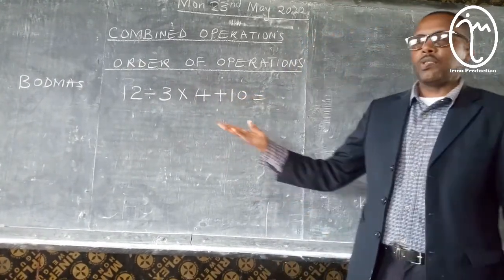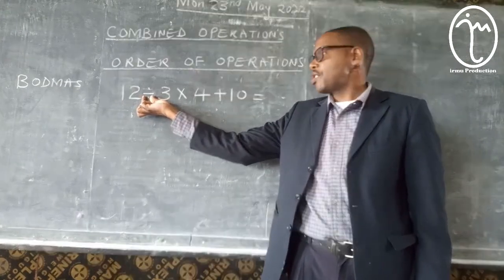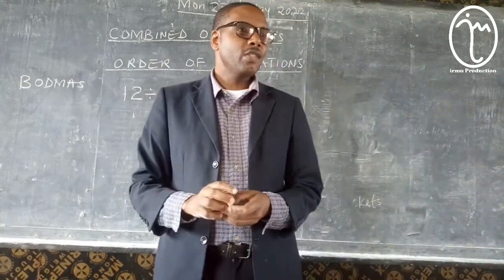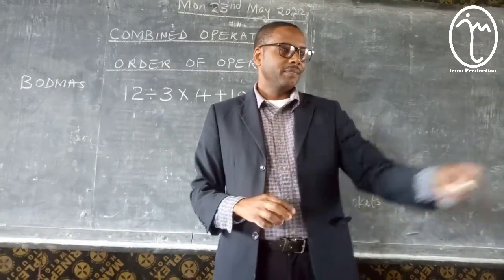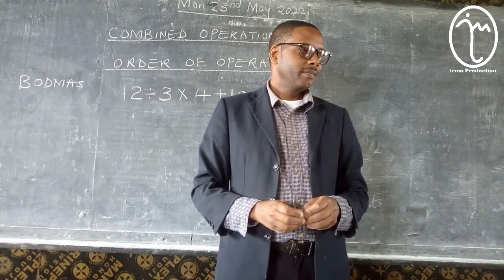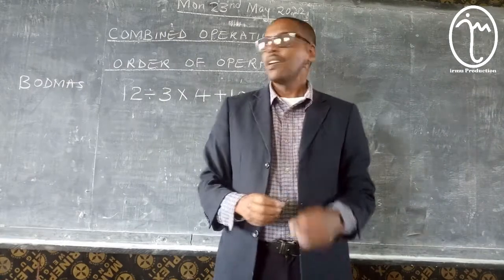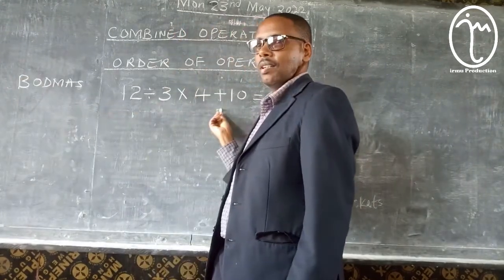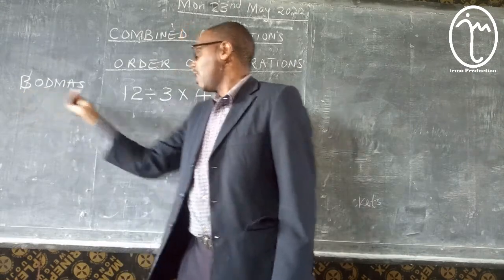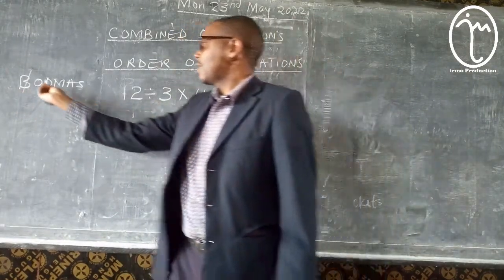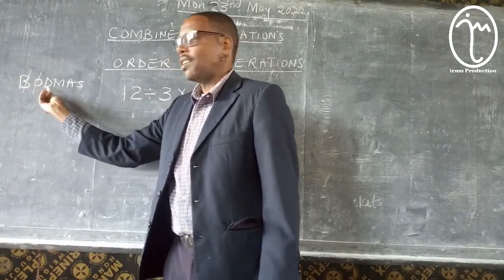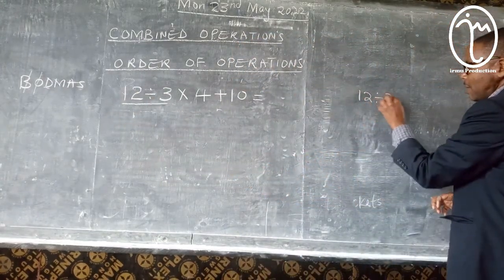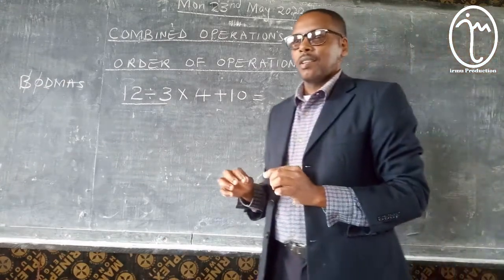Now I want us to do this question. It is made up of division, multiplication, and addition. So who can tell us which is the first operation we are going to do? We are going to start with division. Look at me — is there a bracket in the question? No. So we just cancel bracket. Is there an 'of' in the question? No. Is there division? Yes. Okay, we should first divide. I underline division. Then I divide 12 by 3.